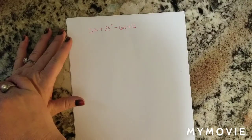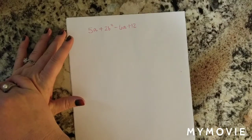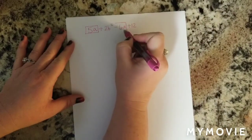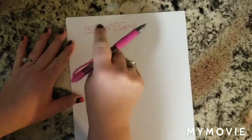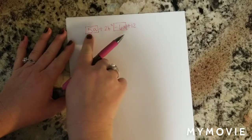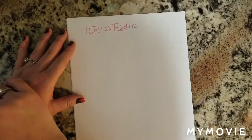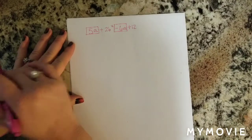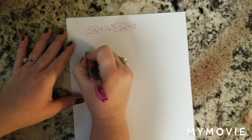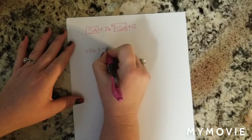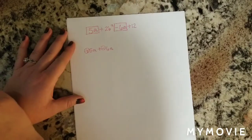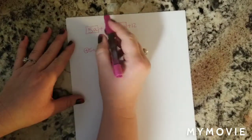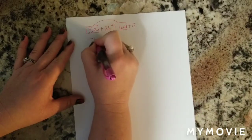Like terms are terms that have the same variable, or they may have no variable. Here we have 5a and negative 6a. It's very important that you pay attention to the signs — this is a positive 5a and a negative 6a. Positive 5 plus negative 6: the signs are different, different means subtract, and we get negative 1a.